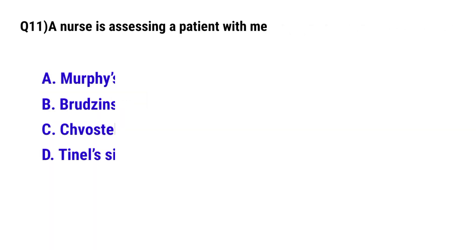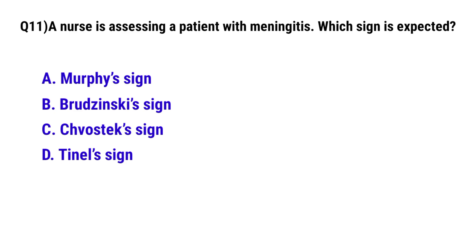Question number 11: A nurse is assessing a patient with meningitis. Which sign is expected? The correct option is D: Brudzinski and Kernig signs.